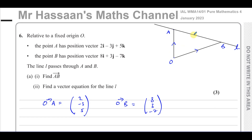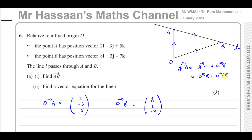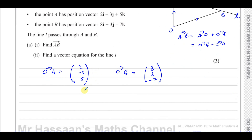They're asking us to find the vector from A to B. From this diagram, if we want to go from A to B, we go from A to O and then from O to B. So A to B equals A to O plus O to B, which is like OB minus OA.